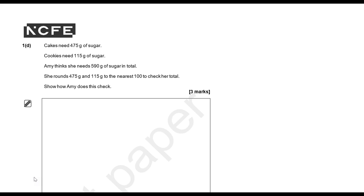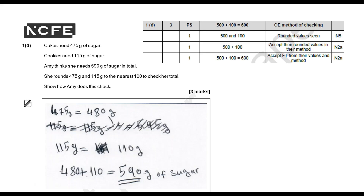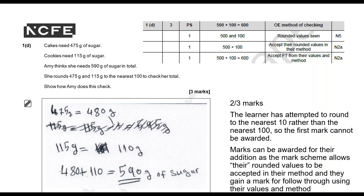Question 1D: Cakes need 475 grams of sugar, cookies need 115 grams of sugar, and Amy thinks she needs 590 grams of sugar in total. She rounds 475 grams and 150 grams to the nearest 100 to check her total. Show how Amy does this check. The learner would get 2 out of 3 marks. The first mark is for showing they've rounded to the nearest 100, but this learner attempted to round to the nearest 10 — they rounded 475 to 480 and 115 to 110 rather than 120. Either way, they were supposed to round to the nearest 100, so we can't give them the first mark.